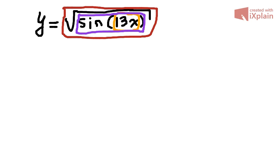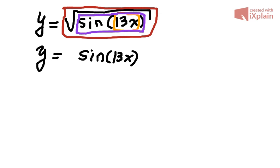It's not looking that easy because that root function almost causes a problem. So maybe we could rewrite it in a different way. We basically have sine of 13x all inside the square root. But a square root is the same as a power — to the power of one half. Exponent 1, index of the root 2. This way it may look easier.